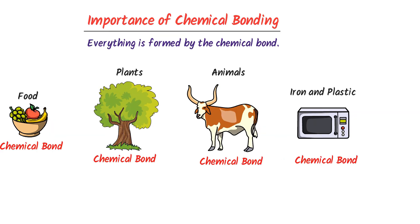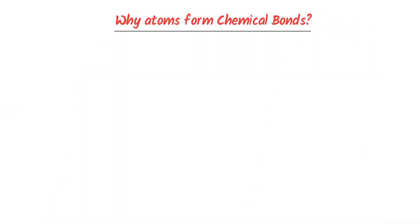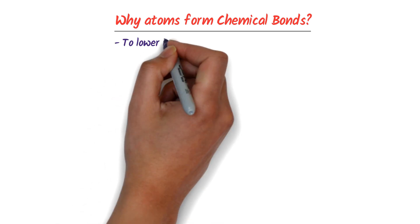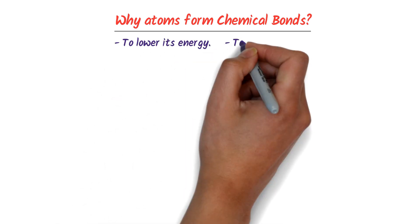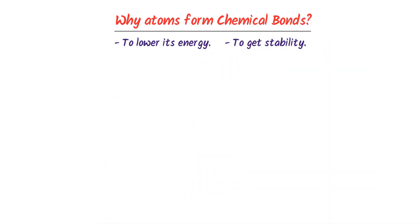Now you should also learn why atoms form chemical bonds. Atoms form chemical bonds in order to lower their energy and get stability.